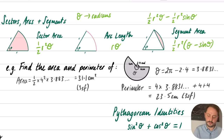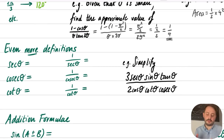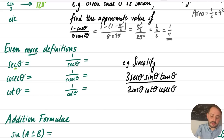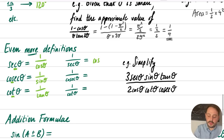Year two introduces sec, cosec, and cot. The trick is to look at the third letter: sec θ = 1/cos θ (third letter c), cosec θ = 1/sin θ (third letter s), cot θ = 1/tan θ. Conversely, 1/sec θ = cos θ, 1/cosec θ = sin θ, and 1/cot θ = tan θ. These are reciprocal trig functions.